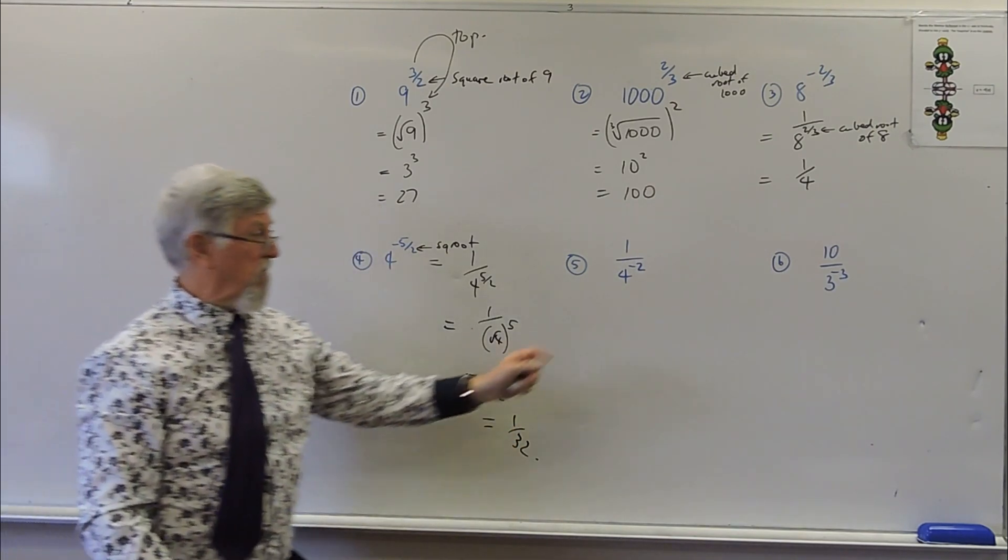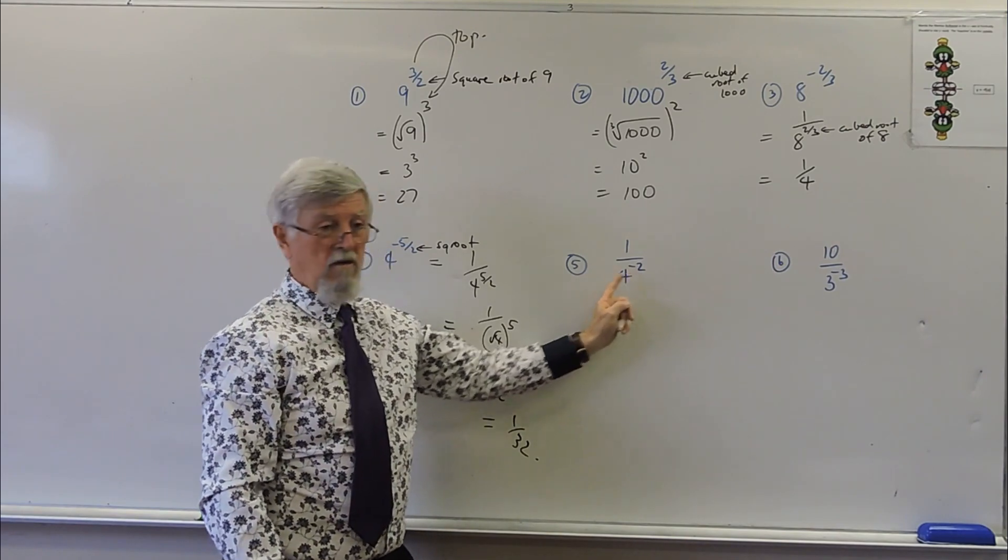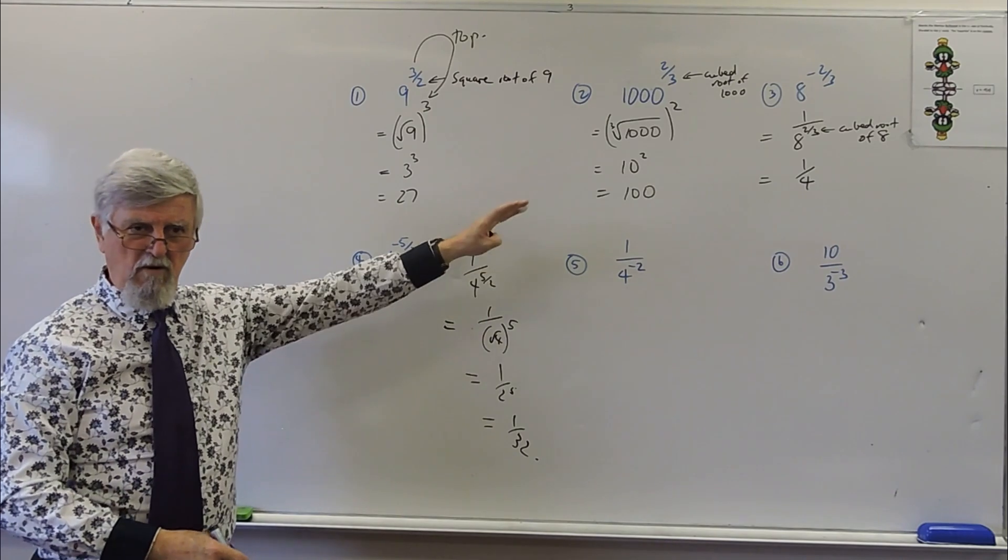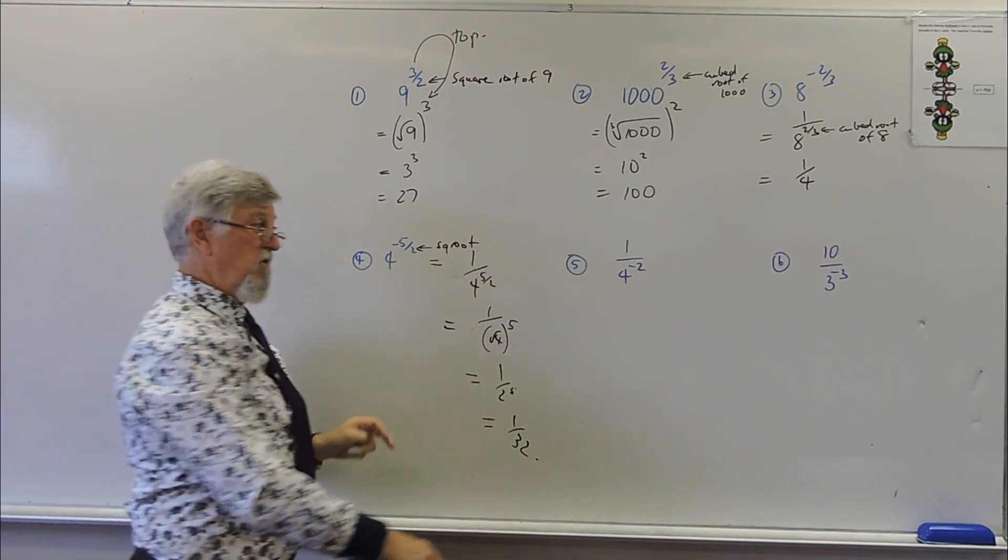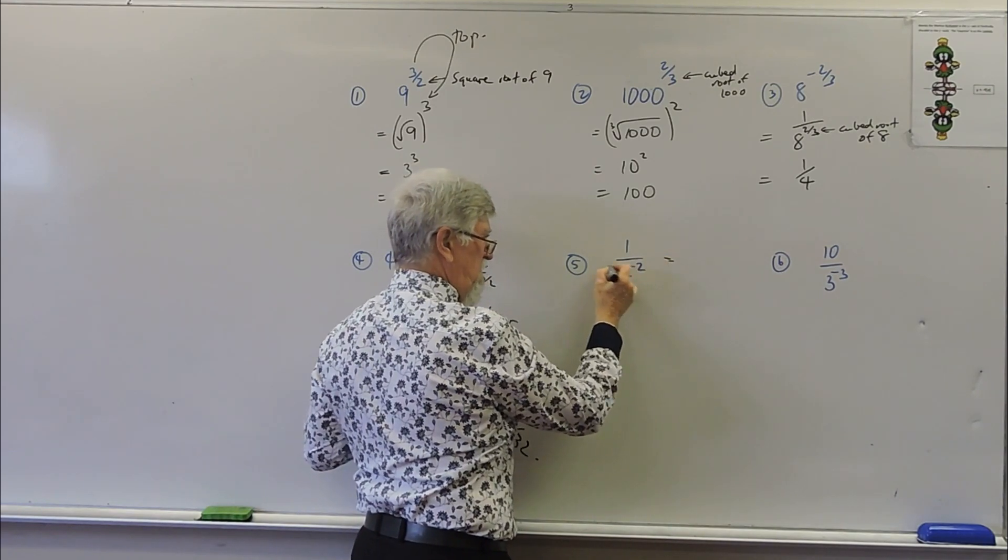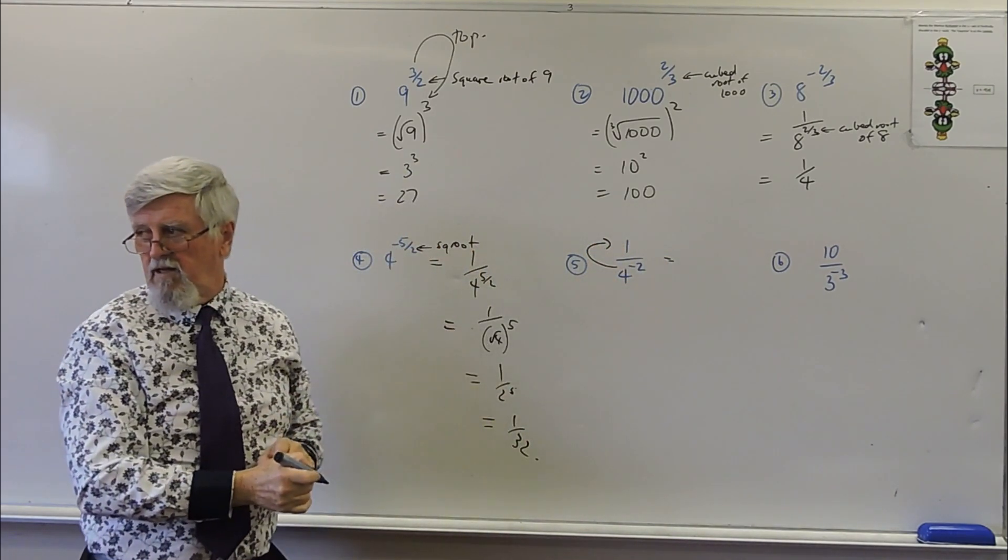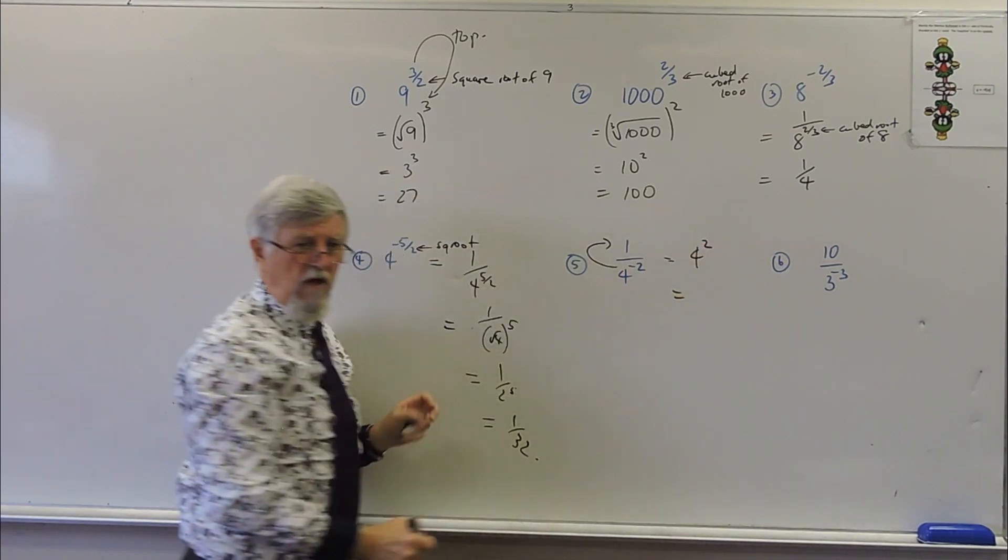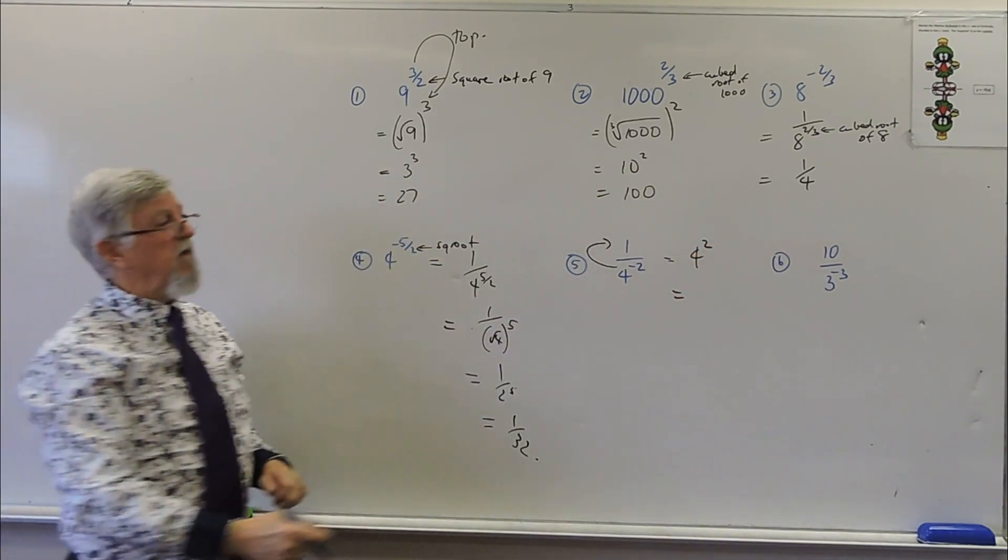Now the two really quick ones, what does the negative power do? Moves it from a denominator to a numerator. So all the time we teach you move from a numerator to a denominator. But what about move from a denominator to a numerator? So the four to the minus two becomes four to the two. Four squared, which is just 16.